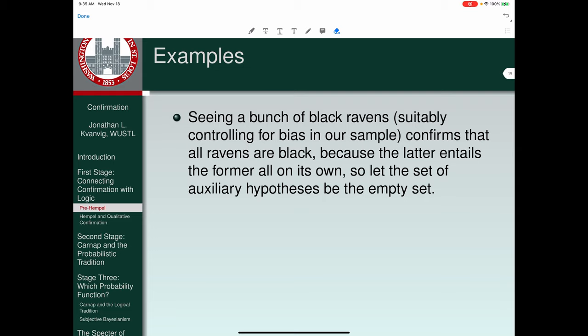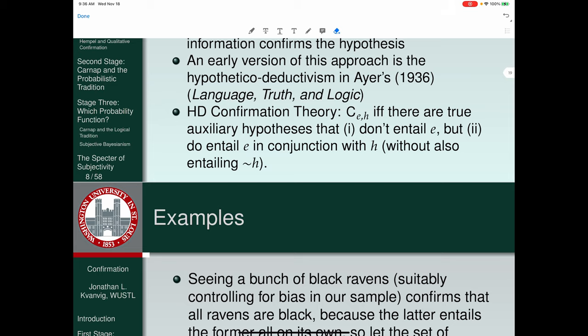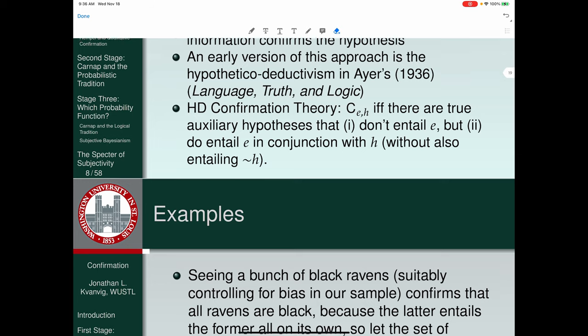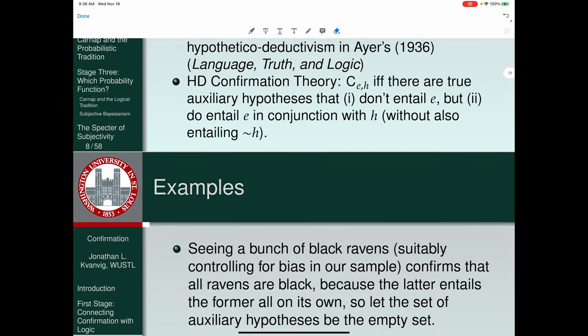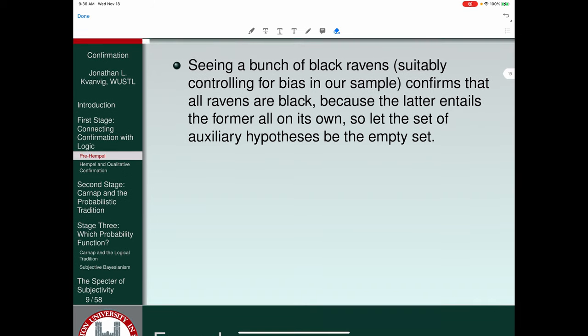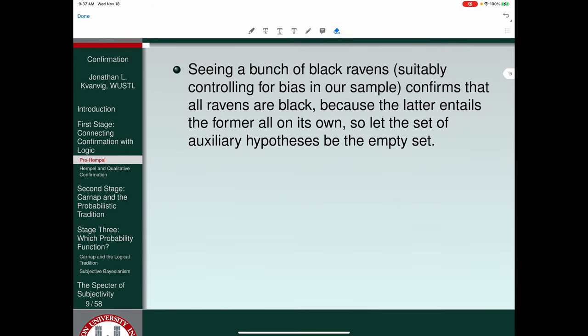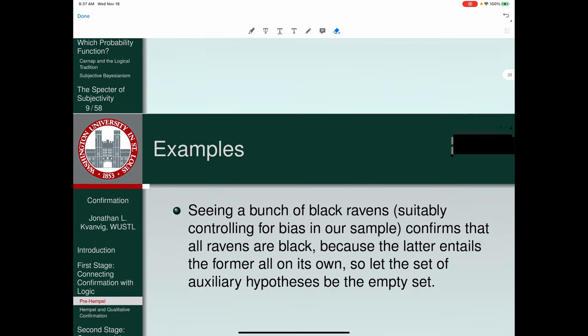So here's some examples. Suppose you see a bunch of black ravens, and suppose you suitably controlled for bias in your sample. So you didn't just look at Forest Park black ravens. That's clearly not the only place in the world that black ravens are to be found. But in any case, you look at a bunch of ravens and it turns out all of them are black. That confirms that all ravens are black because the latter entails the former all on its own. So let the set of auxiliary hypotheses be the empty set. There are true auxiliary hypotheses that don't entail E, so they can't do all of the work, but they do entail E in conjunction with H. So this you might think of as a limiting case for the role of auxiliary hypotheses. You get the entailment relation, and then you get to say the sample confirms the generalization because of the entailment.